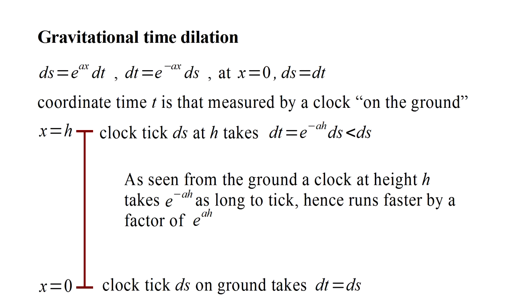In Part A, we developed the idea of gravitational time dilation. The time coordinate t corresponds to the ticks of an atomic clock on the ground. At a height h in the gravitational field, the ticks of an atomic clock, as seen from the ground, take less time, and the clock therefore appears to run faster by a factor of e to the a h.